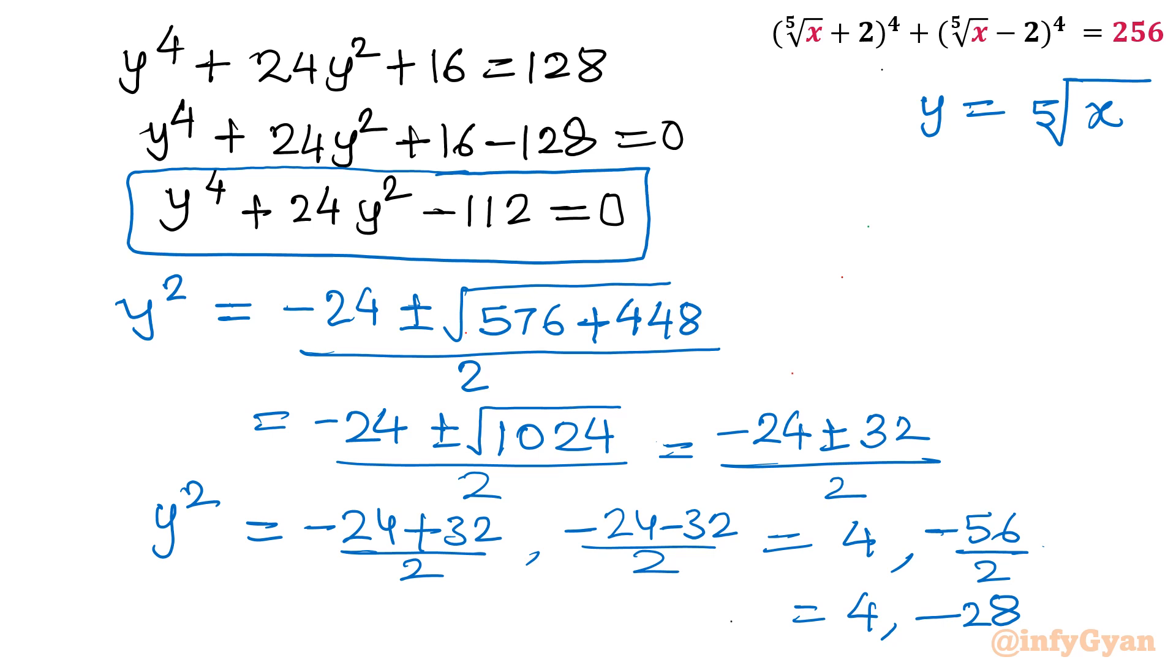So I will reject minus 28 first. Why? Because square cannot be negative for real valued solution. So rejected, it will provide complex solution. So which one is accepted? That is y square is equal to 4.